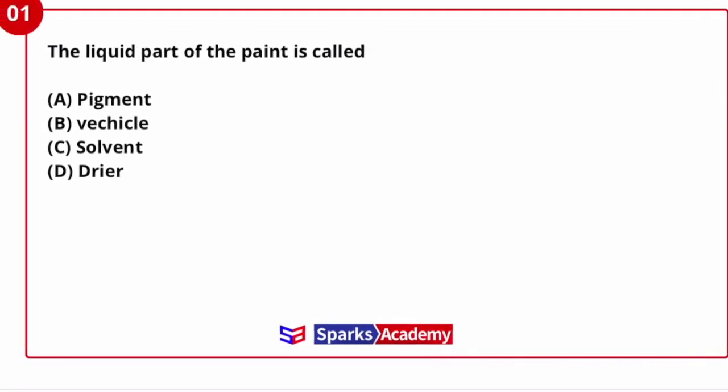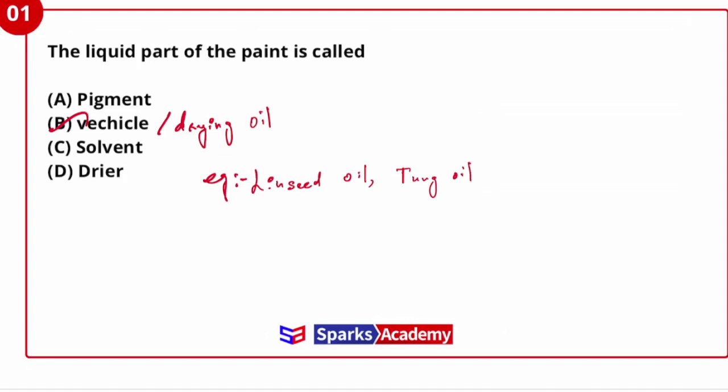Paint has many components present: base, vehicle, extenders, fillers, dryers, plasticizers, thinners. Among these, the liquid part is nothing but the vehicle. Vehicle is essentially the drying oil. For questions, vehicle's example is linseed oil or tung oil.